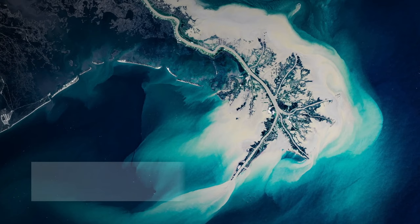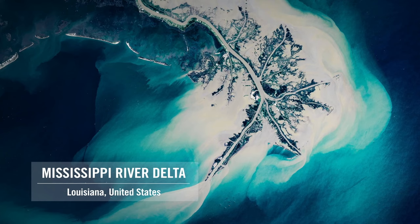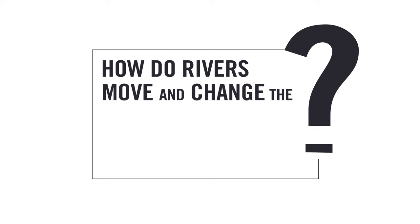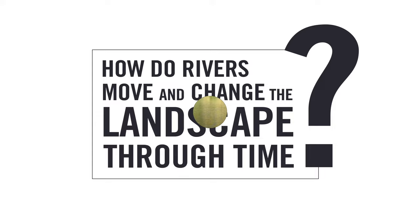Rivers like the Mississippi have transported sediments hundreds, even thousands of kilometers to create depositional features like the Mississippi River Delta. How do rivers move and change over time, and how do they modify the landscapes they flow through?